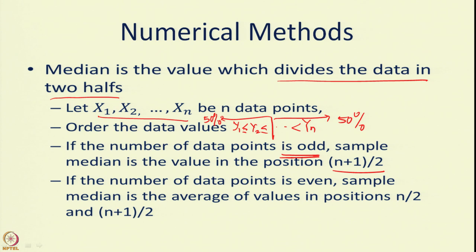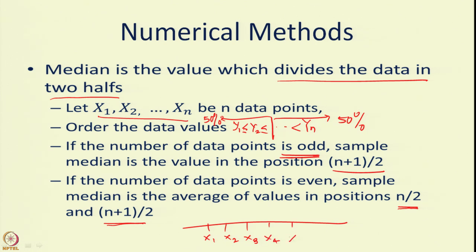If the number of data points is even, there is no single middle value — there are two middle values. So you take the average of the value at the n/2-th position and the value at the (n/2 + 1)-th position. For example, if you have ordered data points x1, x2, x3, x4, x5, then x3 is the median. But if you add a sixth point x6, then the median becomes the average of x3 and x4.